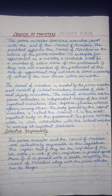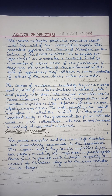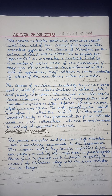The council of ministers is headed by the prime minister and consists of cabinet ministers, ministers of state, and deputy ministers. The cabinet ministers are the senior ministers in independent charge of the most important ministries like defense, finance, and external affairs among others. The body formed by the cabinet ministers is called the cabinet, and it is the most important body in the government.